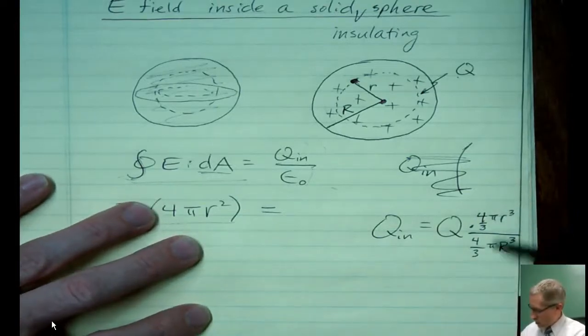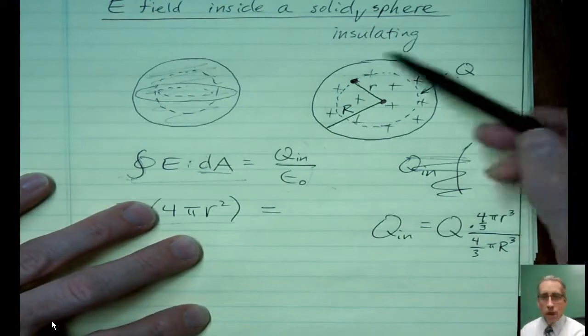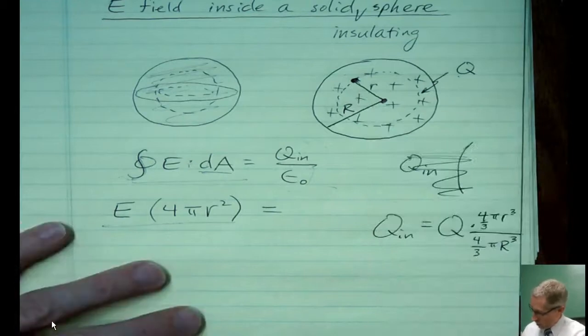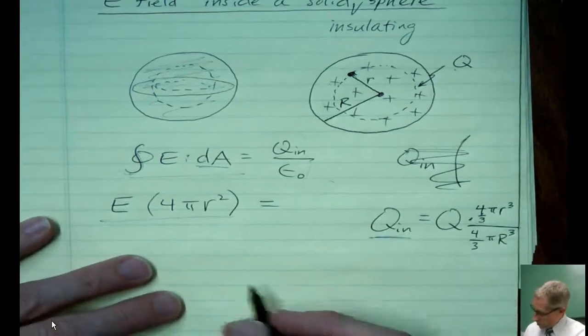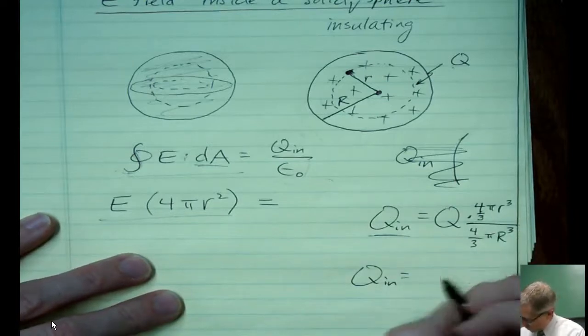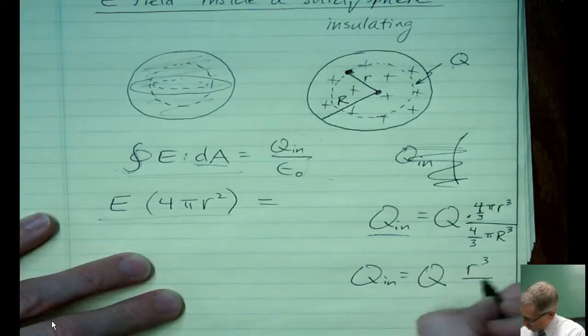That fraction right there is the fraction of the volume inside divided by the fraction of the entire volume. And that fraction will be the fraction of the big Q that's inside. So, of course, what happens here is the 4/3π cancel out. And you've got Q times little r³ over big R³.